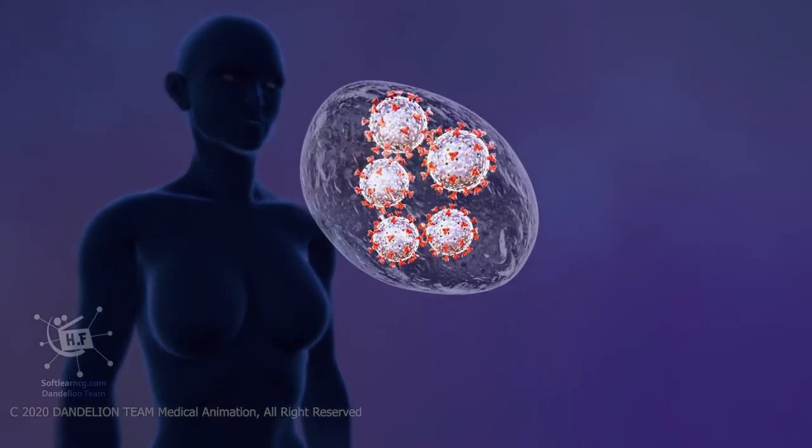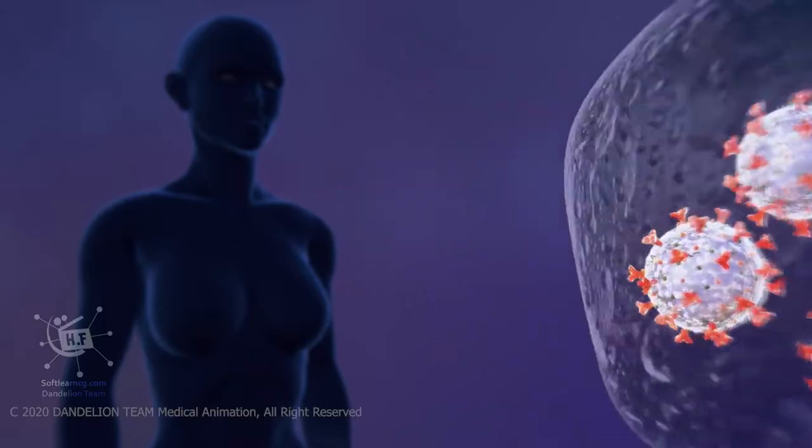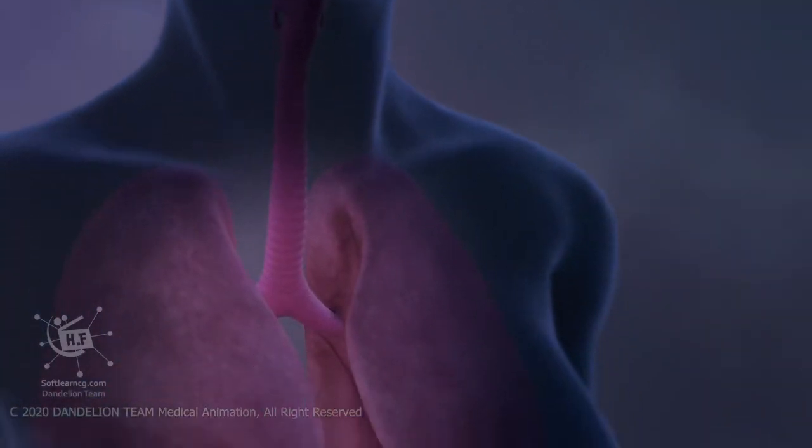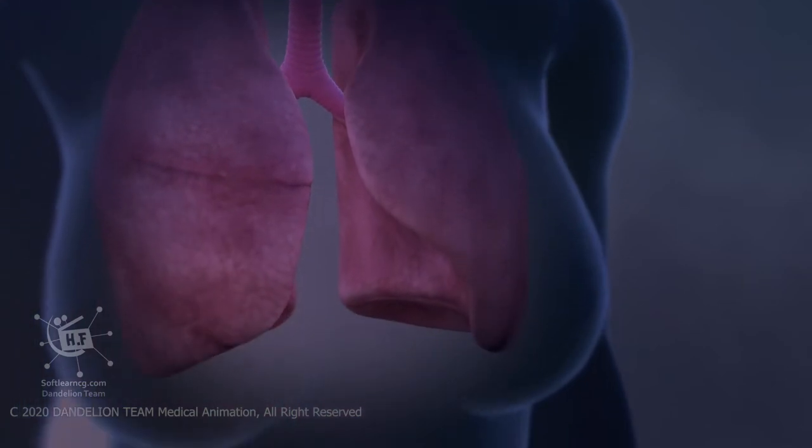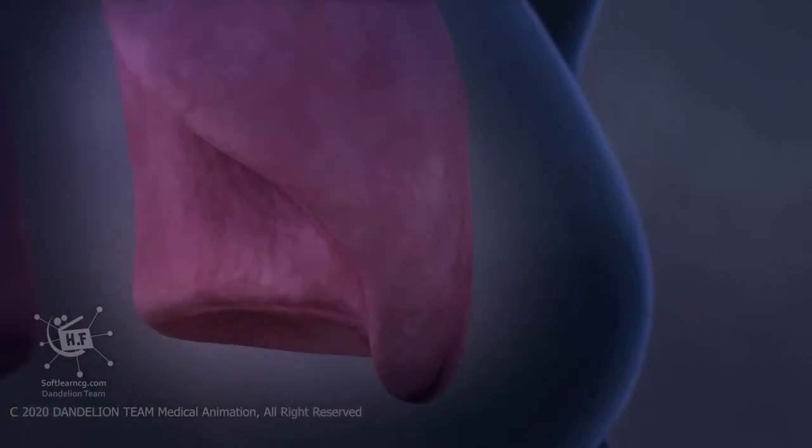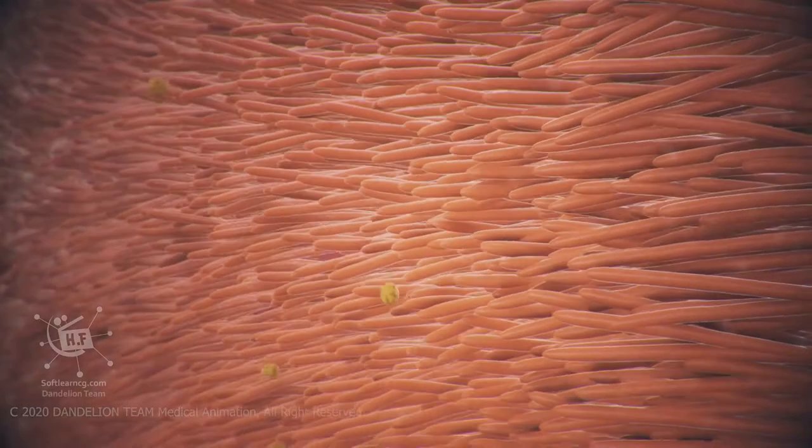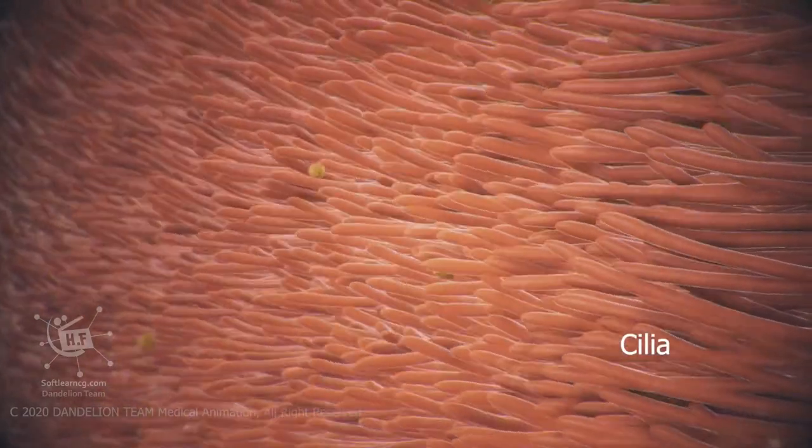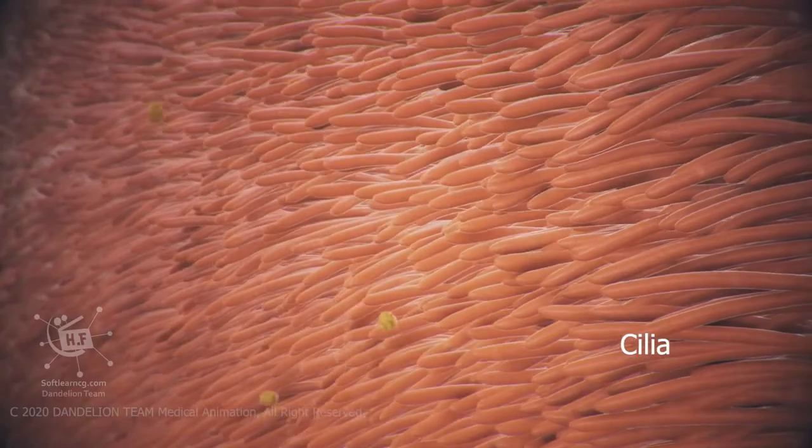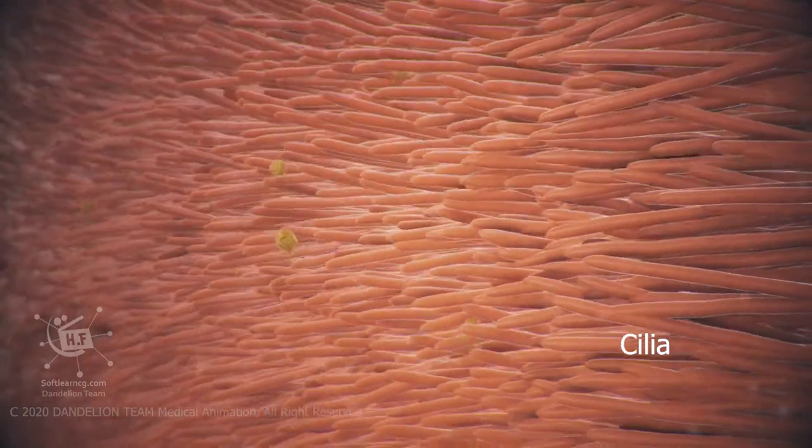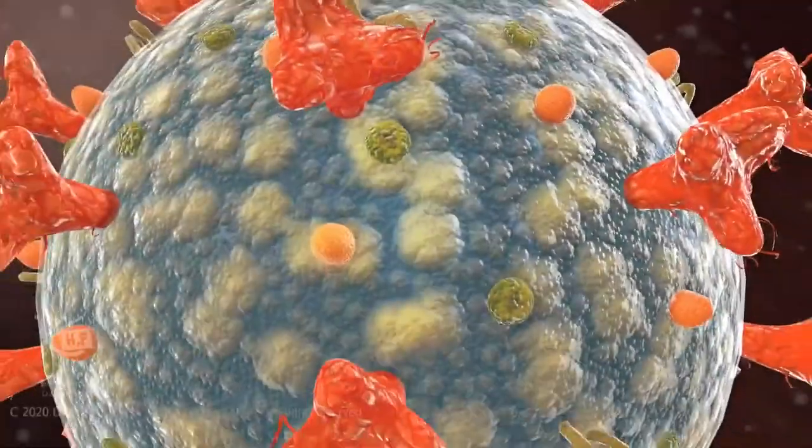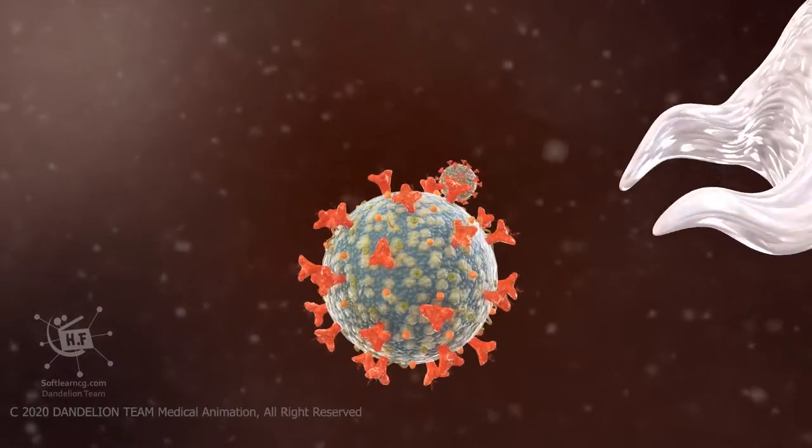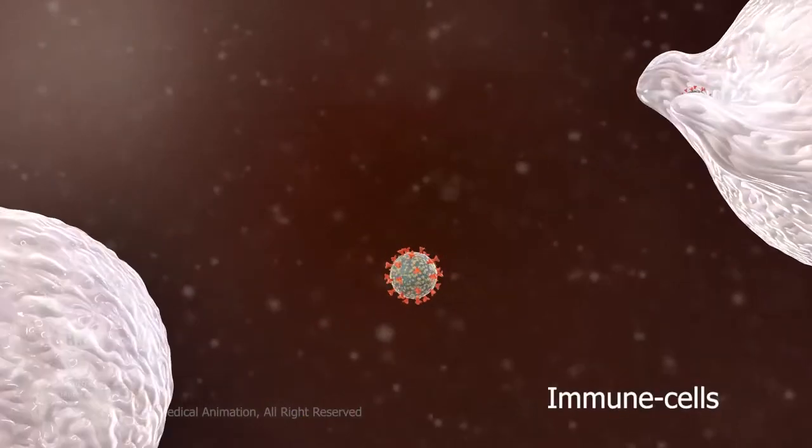When an infected person talks, coughs, or sneezes, droplets carrying the virus may land in your mouth or nose and then move to your lungs. In a healthy body, hair-like structures called cilia constantly push mucus and germs out of your airways, where you may expel them by coughing. Normally, your immune system attacks viruses and germs that make it past the mucus and cilia.